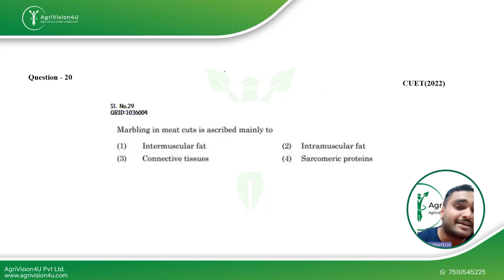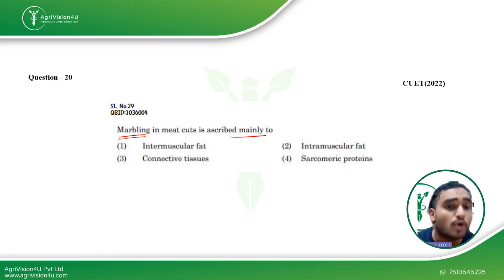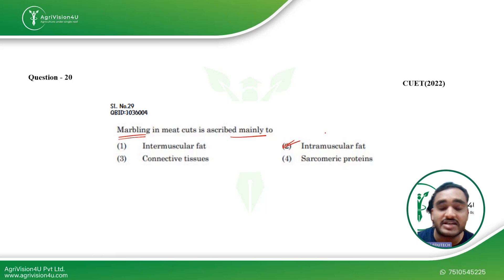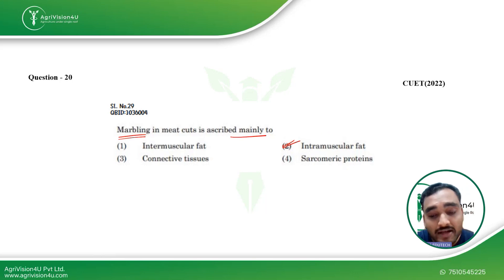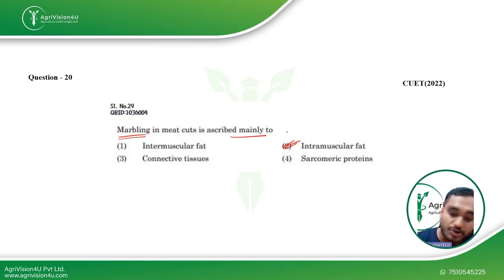Coming to the next question: marbling in meat cuts is ascribed mainly to what? Marbling is not related to actual marble but is similar in appearance — it is usually found in pork meat because it is high in fat content. It is related to intramuscular fat, which occurs when fat layers between the muscles form a pattern similar to marble. That is called marbling in meat cuts, and it is caused by intramuscular fat. Option B is the answer. This question was also asked in CVT 2022.